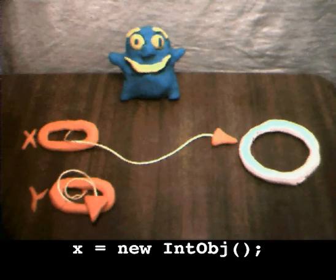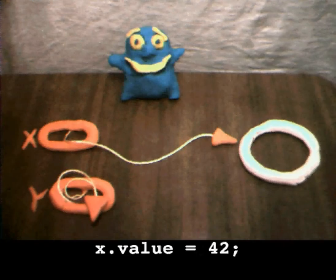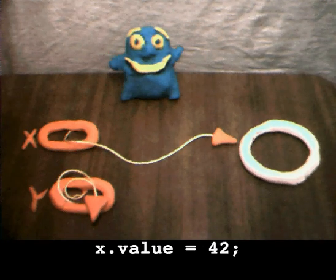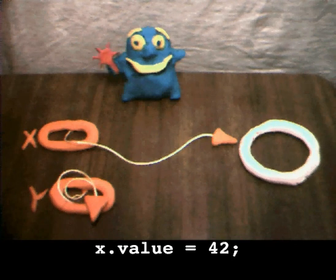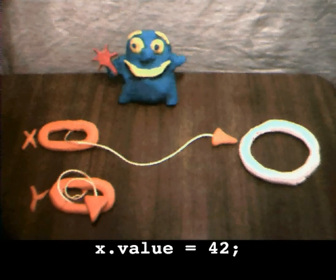Okay, I'll dereference the pointer x to store the number 42 into its pointee. For this trick, I'll need my magic wand of dereferencing. Your magic wand of dereferencing? That's great.